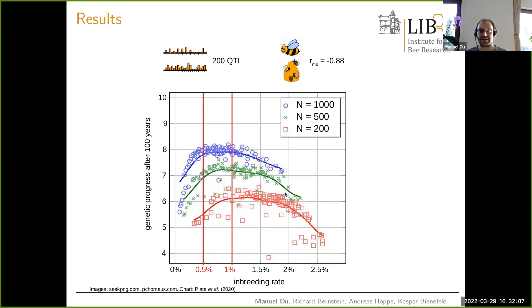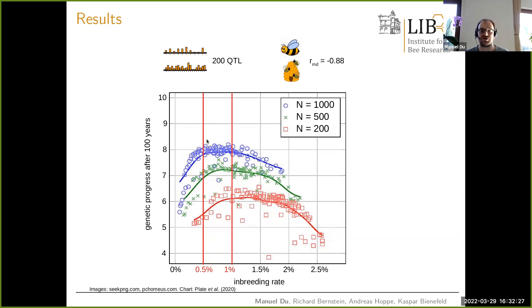With slightly bigger populations it becomes much easier to find breeding strategies that are both successful and sustainable. With a large population of 1000 queens per year, one should seriously consider targeting the stricter 0.5% inbreeding goal.